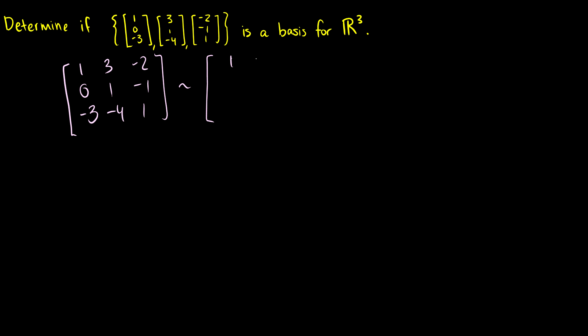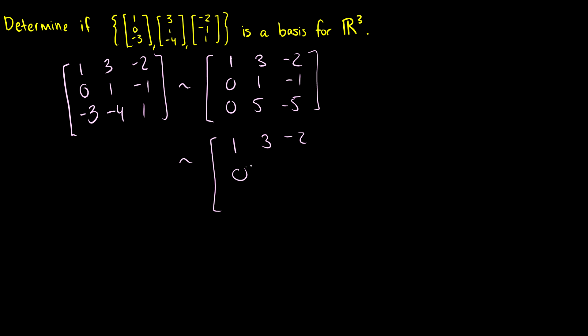The first and second rows are kept. We get a row (0, 1, -1). Then adding 3 times the first row to the third row gives: 0, negative 4 plus 9 is 5, and 1 plus negative 6 is negative 5. After further reduction we have (1, 3, -2), (0, 1, -1), and a row of all zeros.